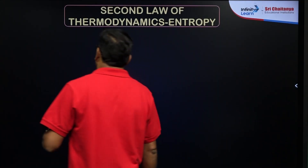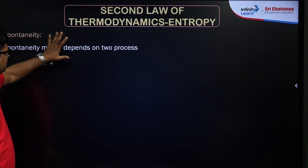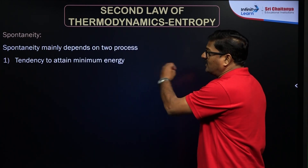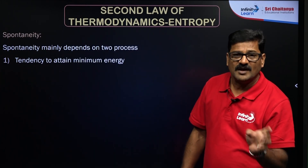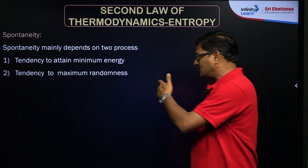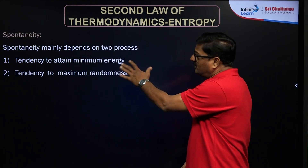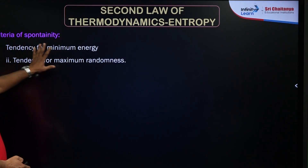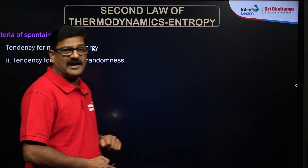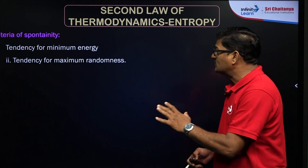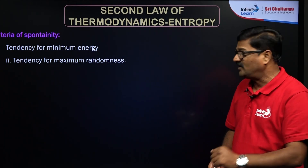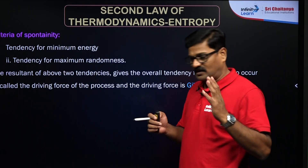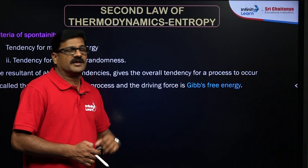The criteria of spontaneity are mainly governed by two processes: first, the tendency to have minimum energy, and second, the tendency to have maximum randomness. These two parameters play together. Minimum energy decides enthalpy, and maximum randomness decides entropy. These two variables are related to one more variable called Gibbs free energy change.